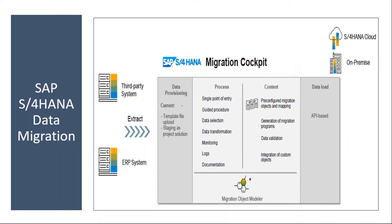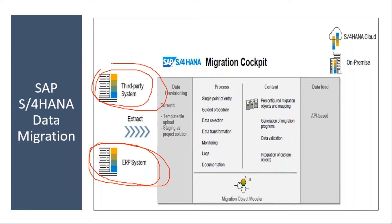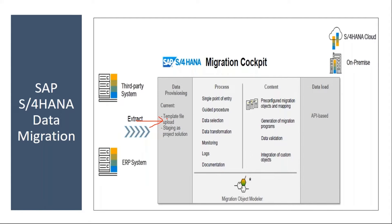Normally during implementation, you may have an SAP ERP system — an older version — or any third-party legacy system. From these systems, you extract the data and put it in a file, then upload it into the SAP S4HANA system. For this data upload, you use the migration cockpit. You extract the data from the legacy system, put it in the file, and simply upload it.